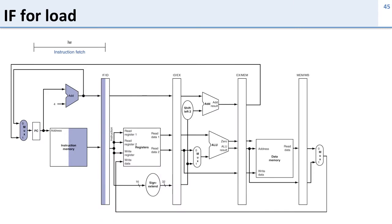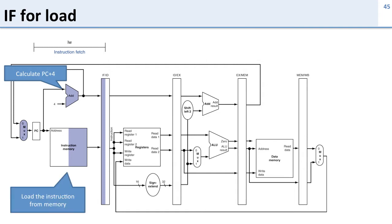Here's instruction fetch for the load — it's the first part of the pipeline. In instruction fetch we're going to calculate PC plus 4, that is we're calculating the next PC to load, and we're going to load the instruction from the instruction memory. What are we going to store in the pipeline register? We're going to store the PC plus 4 we just calculated and the instruction that we just loaded.